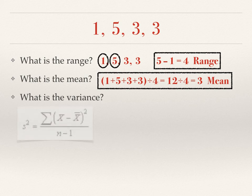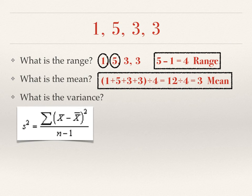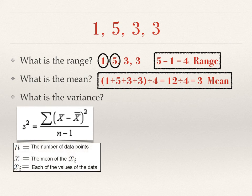Now variance is a little bit of a complicated formula. Let's take a look at it. The denominator is easy enough to figure out. The denominator is simply the number of data points minus one. So in our case, the denominator here will be three.